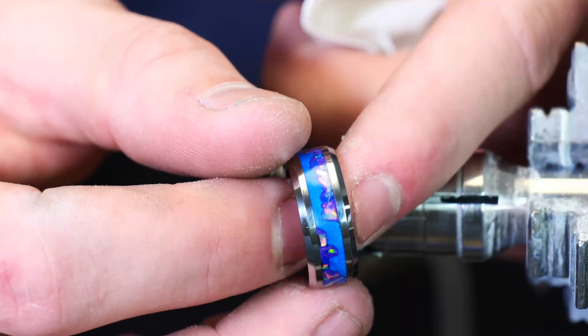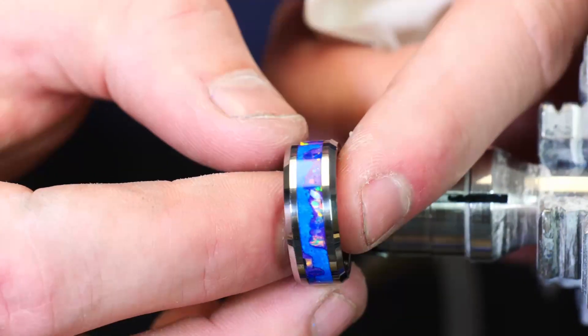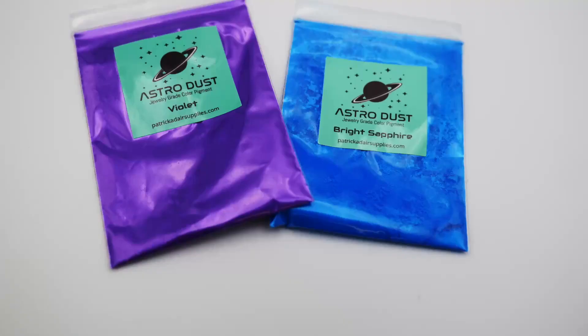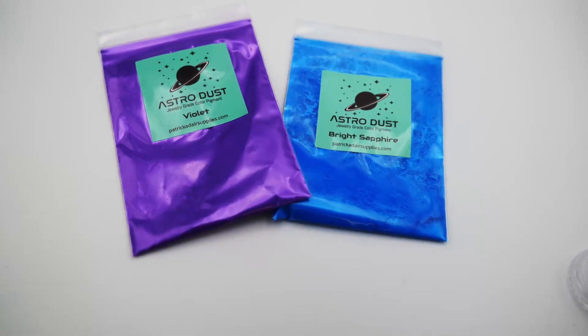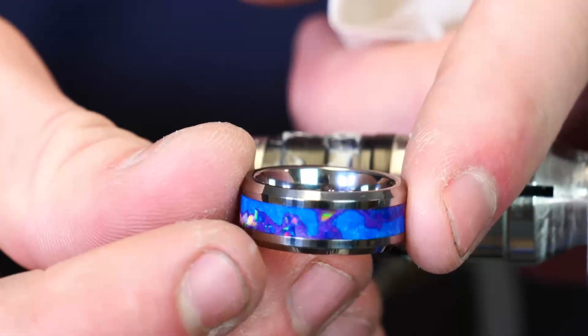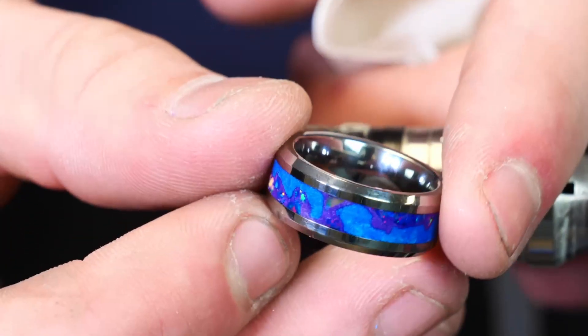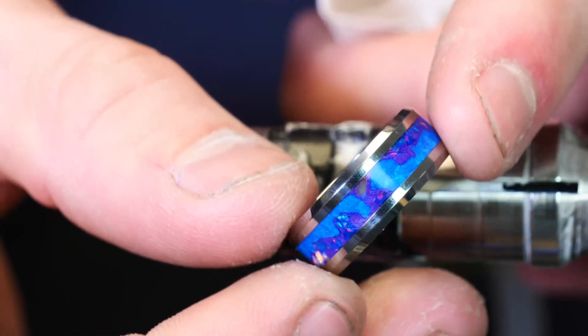I hope you guys enjoyed making this one as much as I did. It was fun to kind of go over a little bit of a different inlay technique, using the different layers of opal and then color pigment and then a different color pigment without having them bleed into each other a whole lot. I think it looks really good and I hope you guys enjoy it. Thanks so much for watching. I'll see you in the next one.